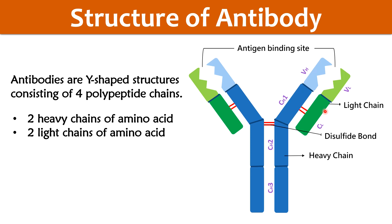The light chain is divided into two parts: variable region and constant region. The upper part of the chain shows the variable region of the light chain, and the bottom part shows the constant region of the light chain. The heavy chain is divided into four parts — the distal part shows the variable region of the heavy chain, and the proximal three parts show the constant region of the heavy chain, numbered 1, 2, and 3.